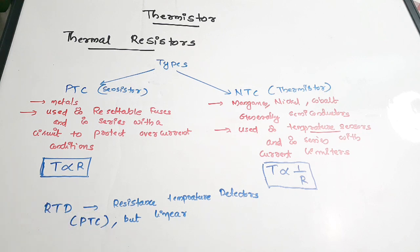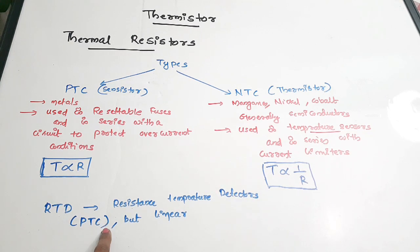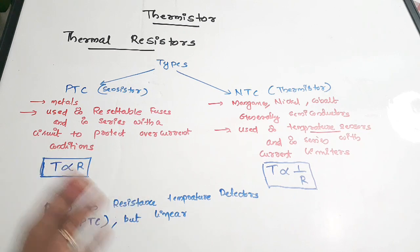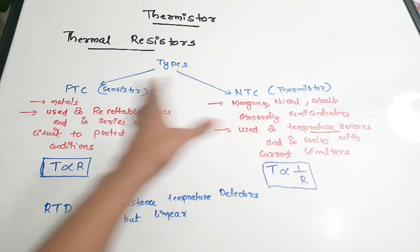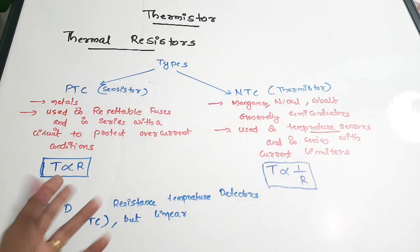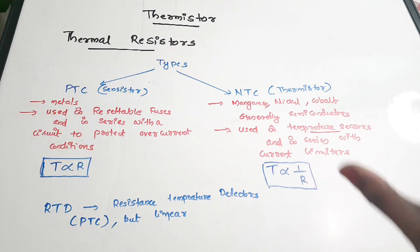There is another category of devices called RTD or resistance temperature detectors, which also have a positive temperature coefficient of resistance. However, the relation between temperature and resistance in RTDs is linear, whereas for both thermistors and sensistors, the relation between temperature and resistance is non-linear.